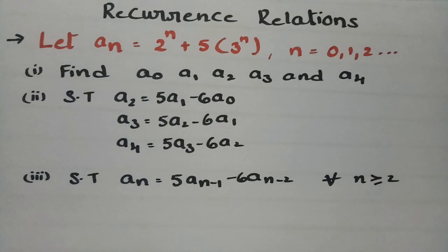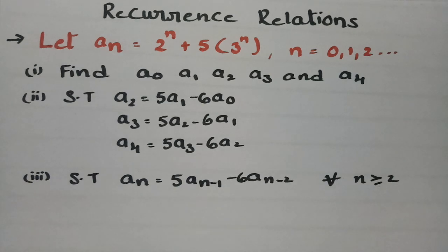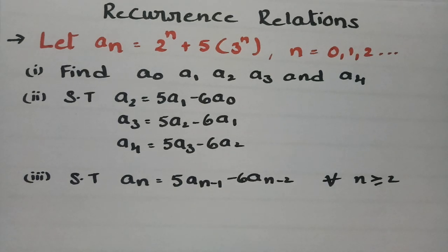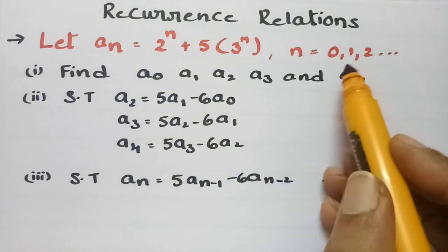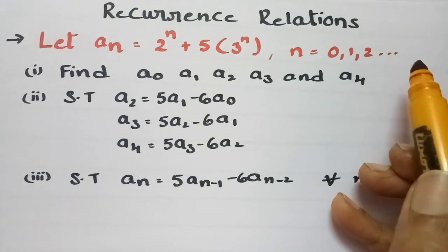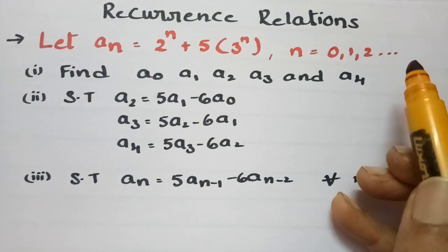In today's video I am going to explain the problem from recurrence relation. The problem is flashing on the screen. Let a_n equal to 2^n plus 5 times 3^n where n equals 0, 1, 2, 3 and so on.